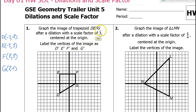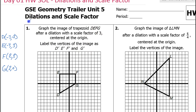We're told that the scale factor is 3. When we have a scale factor, if the original point is x comma y, and the scale factor is 3, then the image is going to be 3x and 3y.